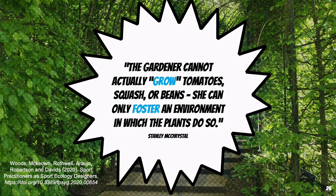Consider this quote: the gardener cannot actually grow tomatoes, squash, or beans — she can only foster an environment in which the plants do so. If we consider human beings to be a complex system who can adapt to changes in their task and environment without any conscious thought, then we need to create the environment in which they learn to do so, but also support them in a way that makes them feel safe. As such, we tend to the garden and the nutrients and sunlight available actually help the plants to grow.